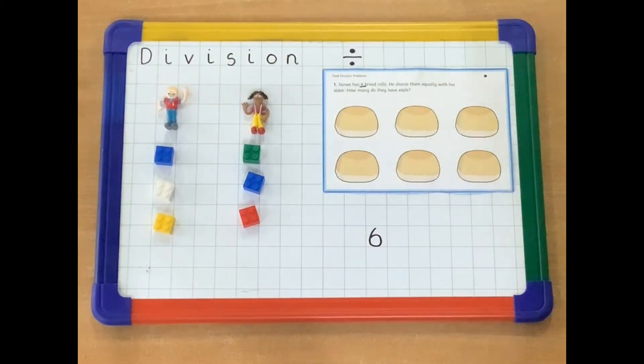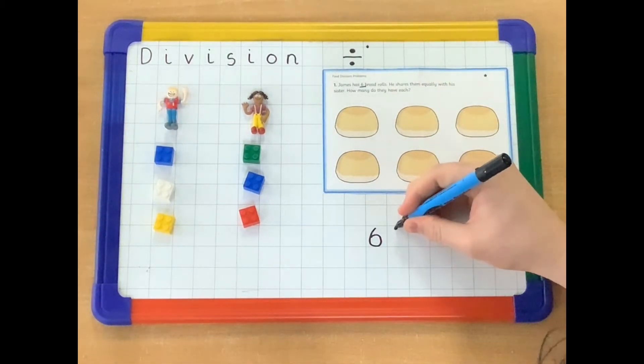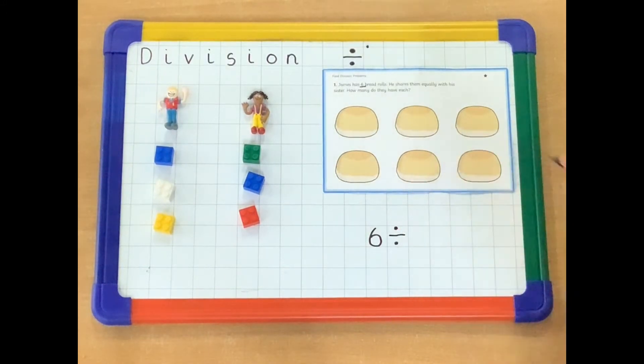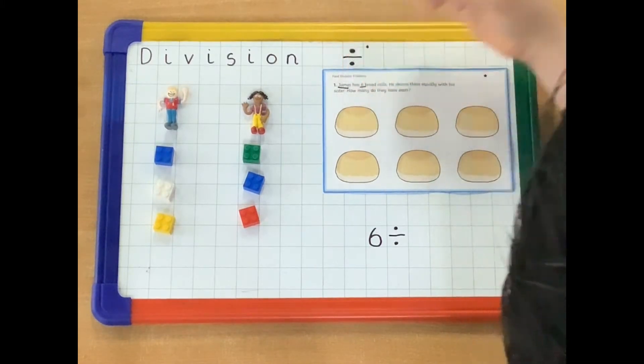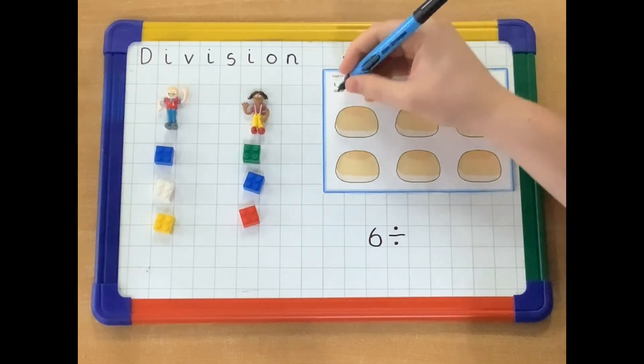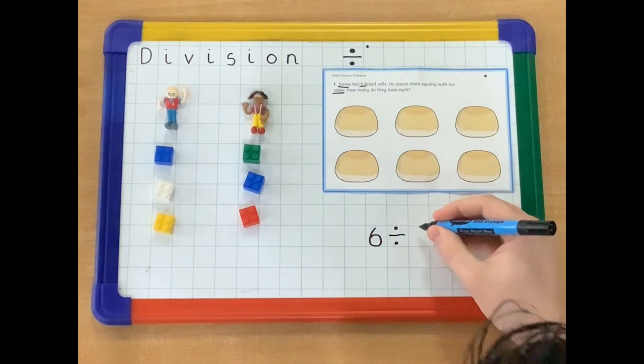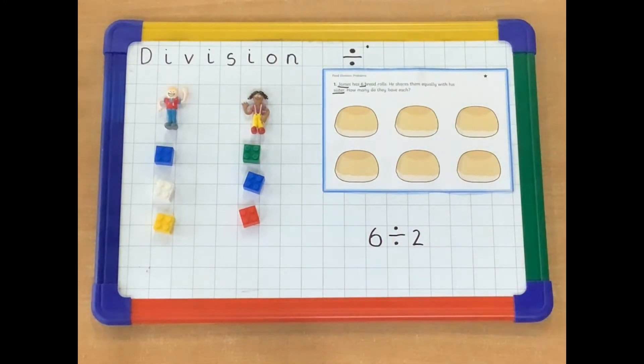So six, we'll start with six. Then we need to use our divide sign. That means to share, to share out. So we're sharing out six rolls. Now we need to find out how many people, how many things we're sharing it between. So we're sharing it between James and he's sharing them equally with his sister. Remember, equally means the same. So we have two people that we are sharing things out with, or between. So six divided by two.